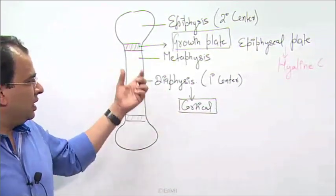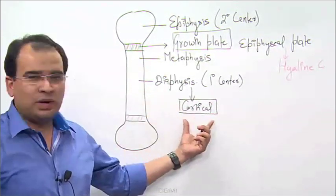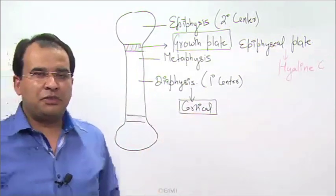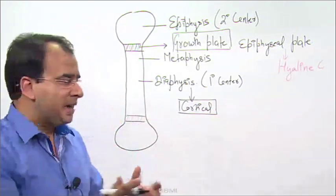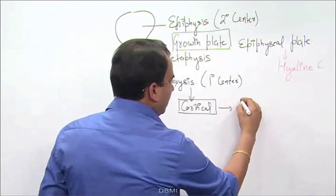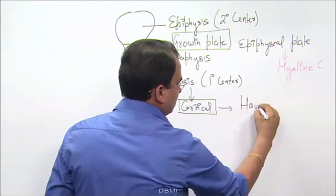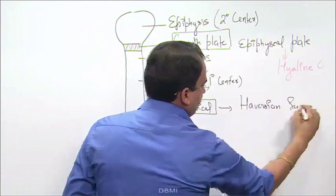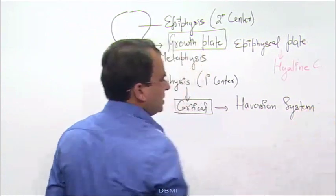We have a cortex and medulla. This is the cortical part of the bone, which is made up of an arrangement of osteocytes in a manner we call the haversian system.